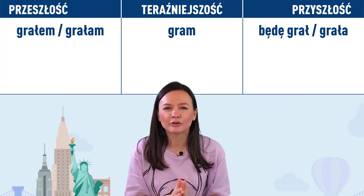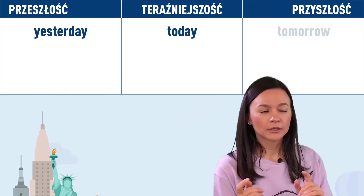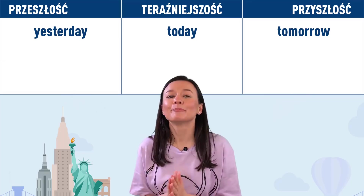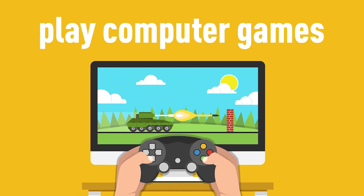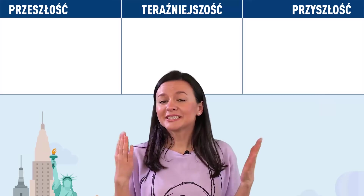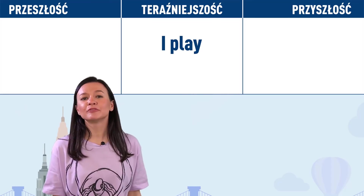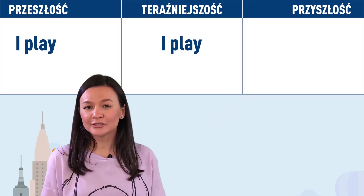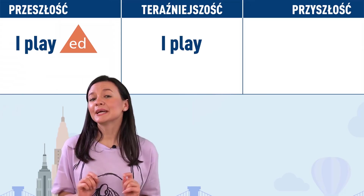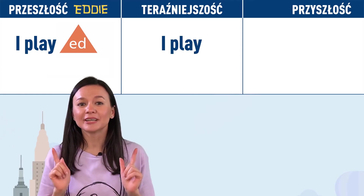I tu mam dla ciebie wspaniałą informację. W języku angielskim zaznaczenie, czy mówię o today, yesterday lub tomorrow jest bardzo proste, a nawet bardzo ciekawe. Pokażę ci to teraz. Na pewno lubisz w coś grać – w piłkę: play the ball, albo w gry komputerowe: play computer games. To play oznacza grać. Jeśli chcesz powiedzieć ja gram, wystarczy powiedzieć I play. To teraz popatrz, jak łatwo jest powiedzieć ja grałem/grałam. Do słowa play, czyli do czasownika grać, wystarczy dodać – uwaga – edka. Jest takie męskie imię Eddie, Edward, którego zdrobnienie brzmi ed. I właśnie takiego edka dodajemy do słowa play.